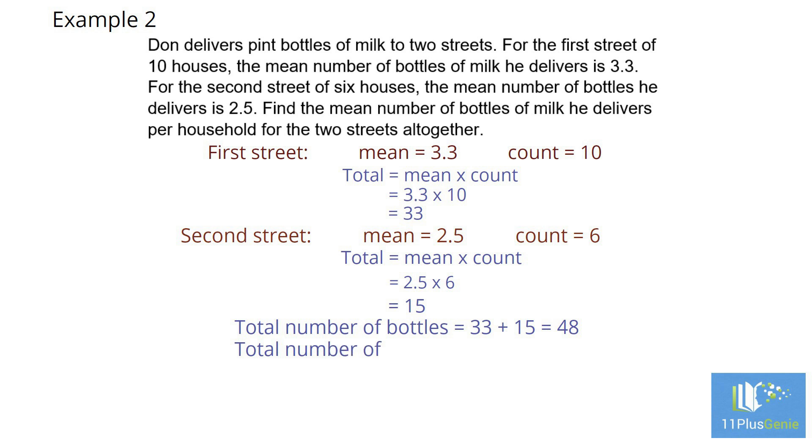The total number of houses in the two streets are 10 plus 6, which equals 16. To find the mean number of bottles per household, we use our formula mean equals total divided by the count. We have 48 divided by 16. The mean number of milk bottles delivered was 3 bottles per house.